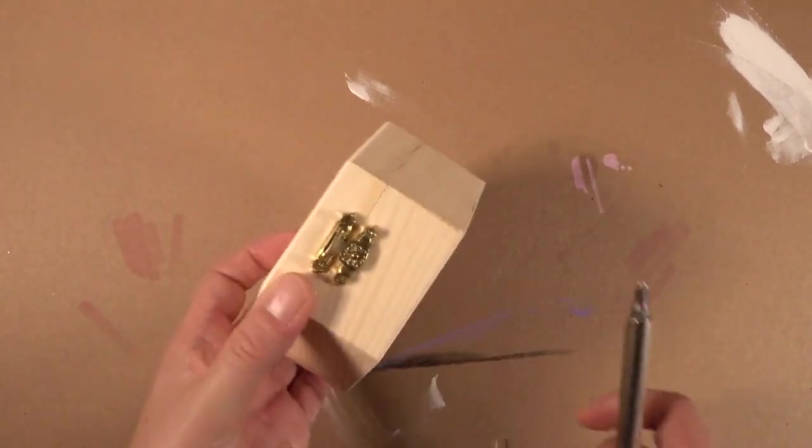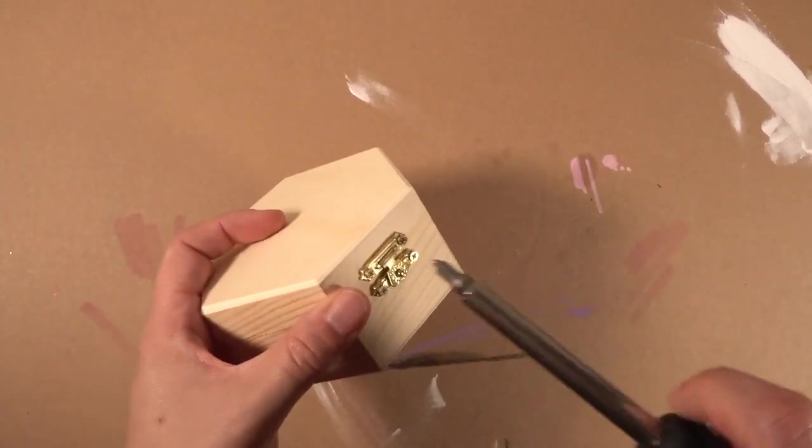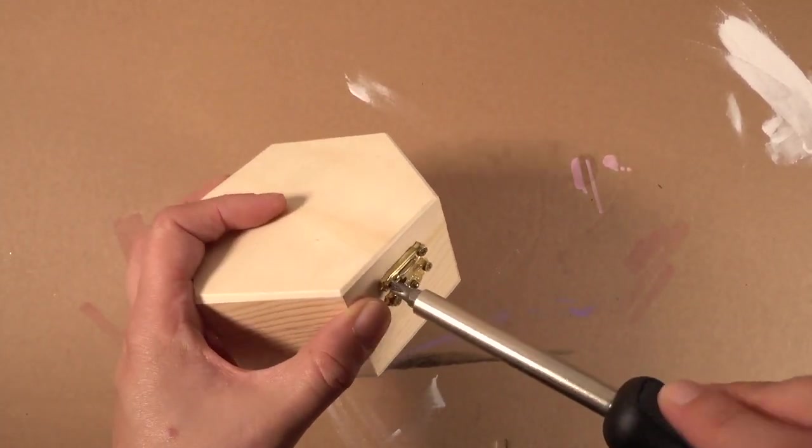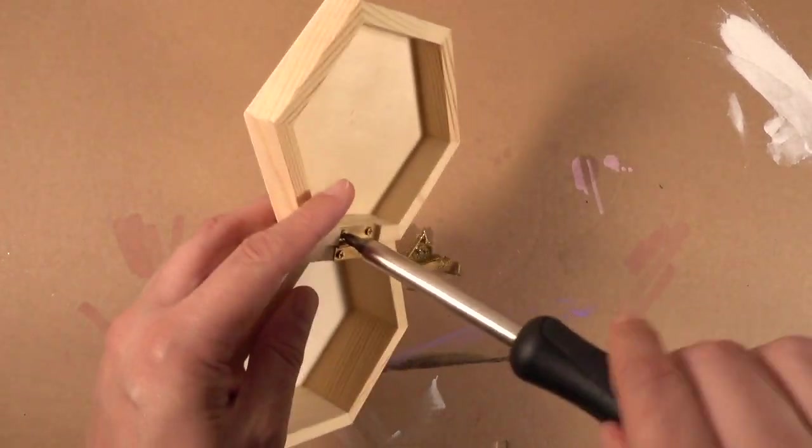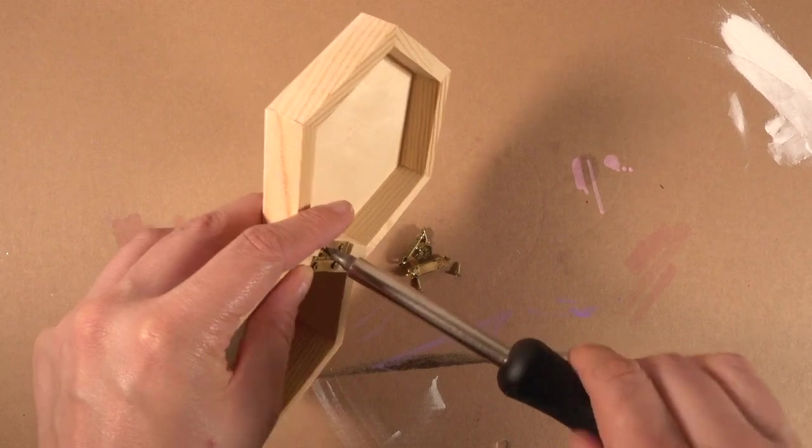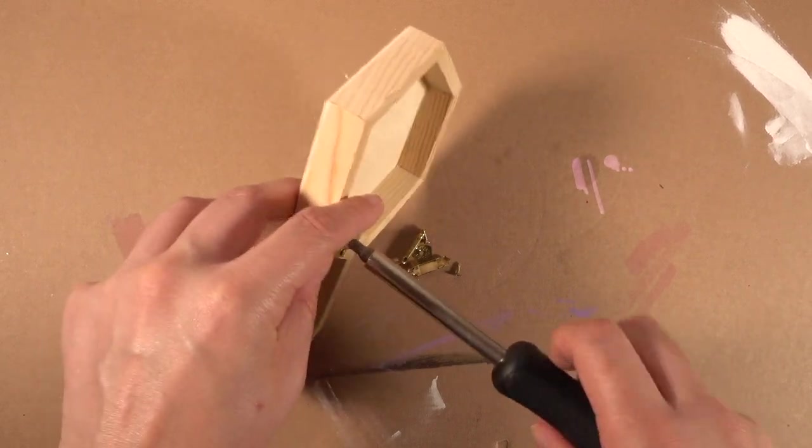So the first thing I did was remove the hardware from the box with a screwdriver. This is going to make the box a little easier to sand and paint. Just make sure you keep all the screws and hinges and stuff in a cup or somewhere because they're very small and very easy to lose and I almost did that a couple times.